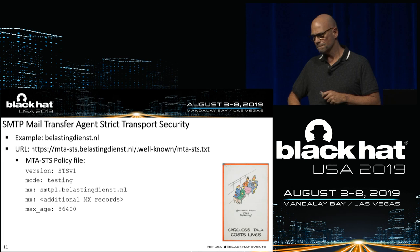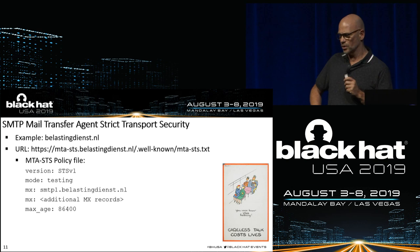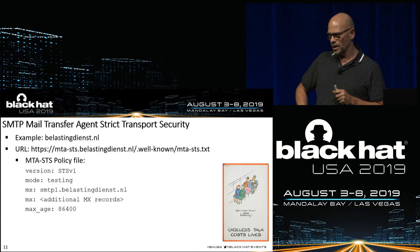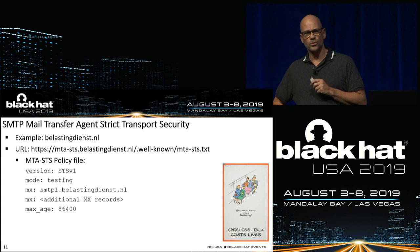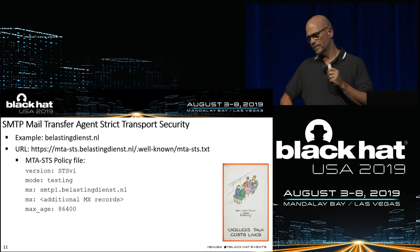The MTA-STS policy file contains the MTA-STS policy and is distributed via HTTPS from the well-known directory. The policy file must be in JSON or TXT format. The MTA-STS policy is a set of key-value pairs: version is always STS-V1. We have chosen 'test' for the mode because it is a fairly new standard and implementation rate is not very high.